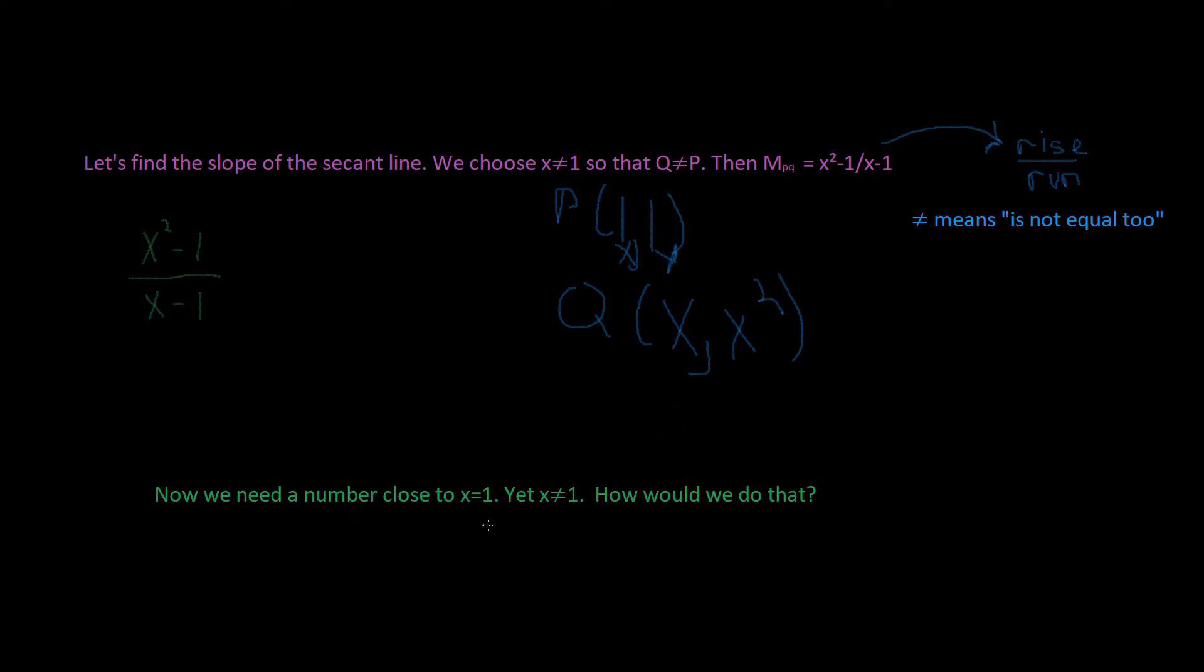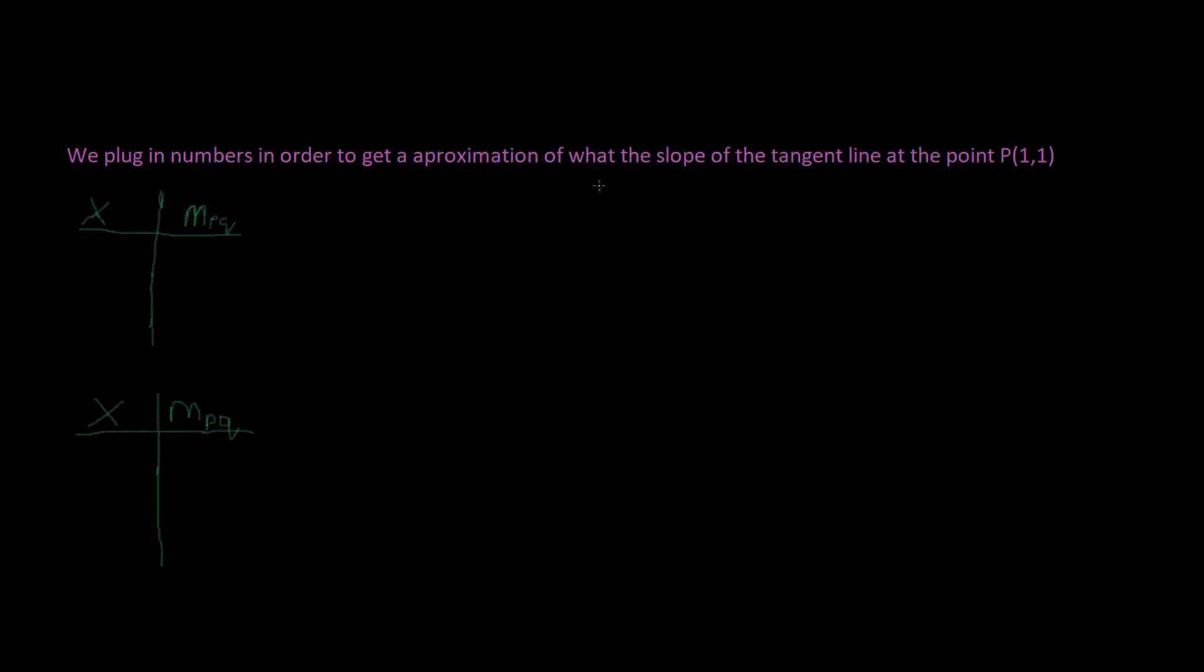Now we need a number close to x equals 1, yet is not equal to x equals 1. How would we do that? In order for us to do that, we need to plug in numbers to get an approximation of what the slope of the tangent line at the point P(1,1) is.